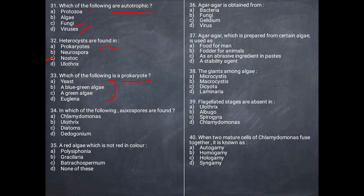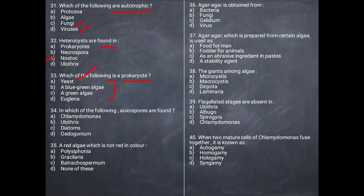Next question: Which of the following is a prokaryote? Is it yeast? No, yeast is not a prokaryote. It is not fungi either. Blue-green algae — blue-green algae are not true algae; they are prokaryotes in the Monera kingdom. The correct answer is B, blue-green algae.